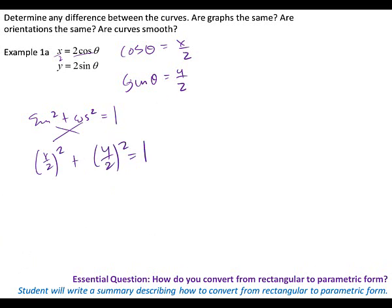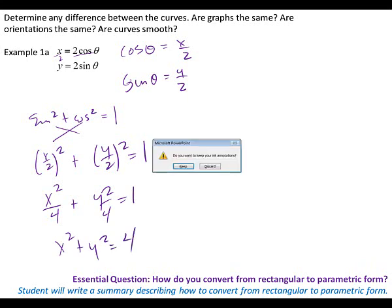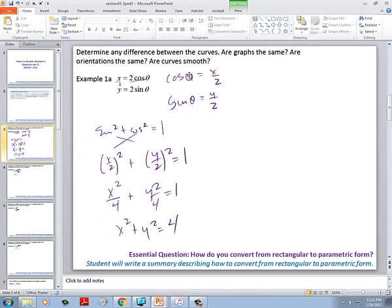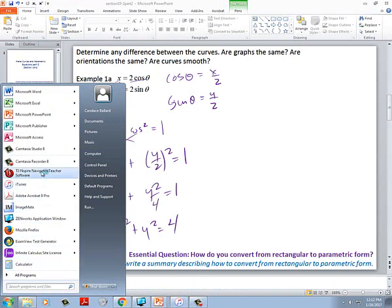I put my cosine first and my sine second but it's the same thing, it doesn't matter. I'm going to simplify this a little bit more. If I squared those I'd have x squared over 4 plus y squared over 4 equals 1, and then I'm going to get the 4 out of the denominator by multiplying everything by 4, so I'd get x squared plus y squared equals 4. Let's use our calculators — put in these parametrically.